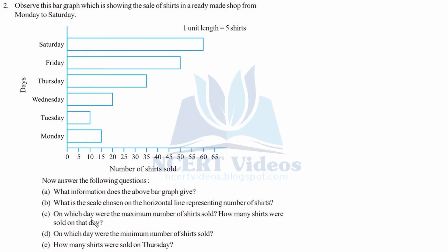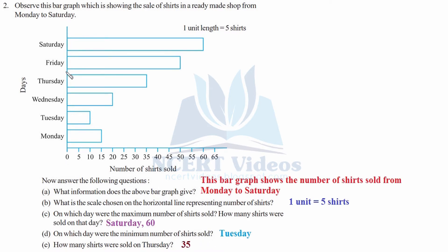Part C — on which day were the maximum number of shirts sold, and how many? Part D — on which day were the minimum number of shirts sold? And the last part — how many shirts were sold on Thursday? The scale on horizontal is 5, 10, 15, each unit meaning five shirts sold.